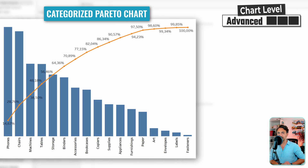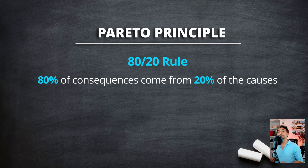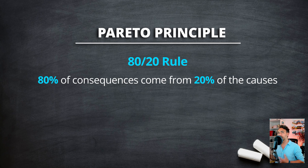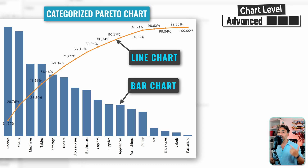Now we have the Pareto chart — it is a very famous chart in statistics, based on the Pareto principle which uses the rule of 80/20. The principle says 80 percent of outcomes are generated from 20 percent of work or efforts. One way to visualize Pareto charts is to use two different charts: the first is a bar chart and the second is a line chart.